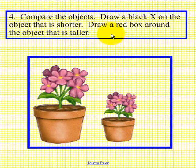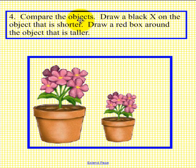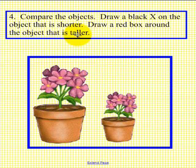Okay, boys and girls, we're looking at the last problem — Problem 4. You'll notice that we have a potted flower here and one here. Compare the objects: draw a black X on the object that is shorter, and draw a red box around the object that is taller. If you would please pick up a pen and do that now. When done, place the pens back in the tray.